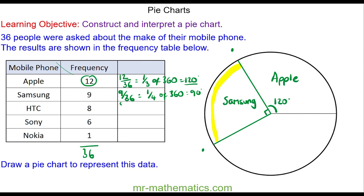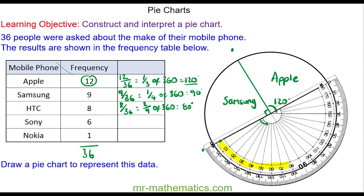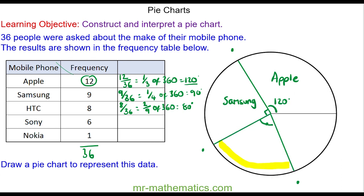For HTC, we have eight people out of 36, and this simplifies to make two ninths, and two ninths of 360 is 80 degrees. So now we're going to draw an 80 degree angle from here. We can put a mark, and then we draw a line from the center to the point. This is our 80 degree angle, which we can label HTC.